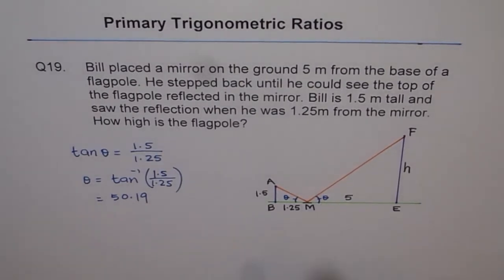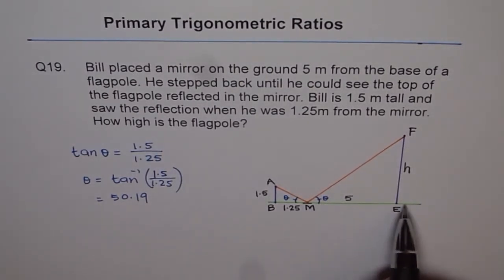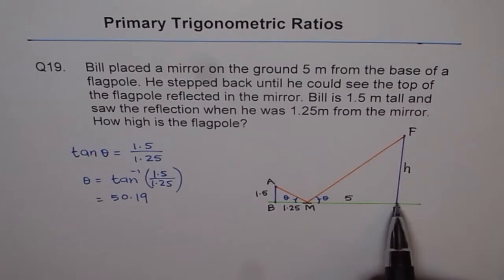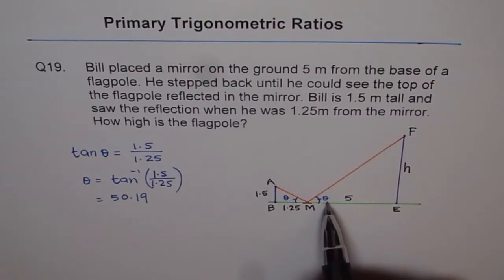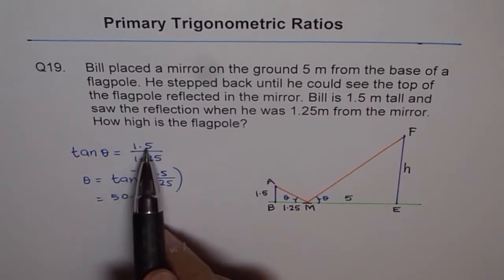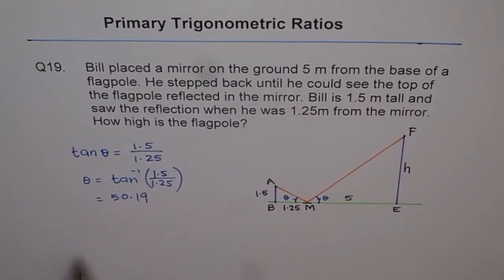Now we know theta is 50.19. The mirror is 5 meters from the base, so the adjacent side is given. We need to find the height, so we can again use the tangent ratio. We know the angle this time. In fact, we can use the same value, 1.5 over 1.25.